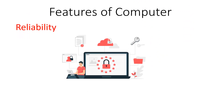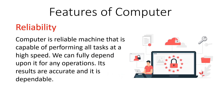The next feature is reliability. Our computer system can perform tasks with great speed and 100% efficiency, so we can trust our computer for doing any kind of task. Computer is a reliable machine capable of performing all tasks at high speed, and we can fully depend upon it for any kind of operation, as the results of a computer are very accurate.